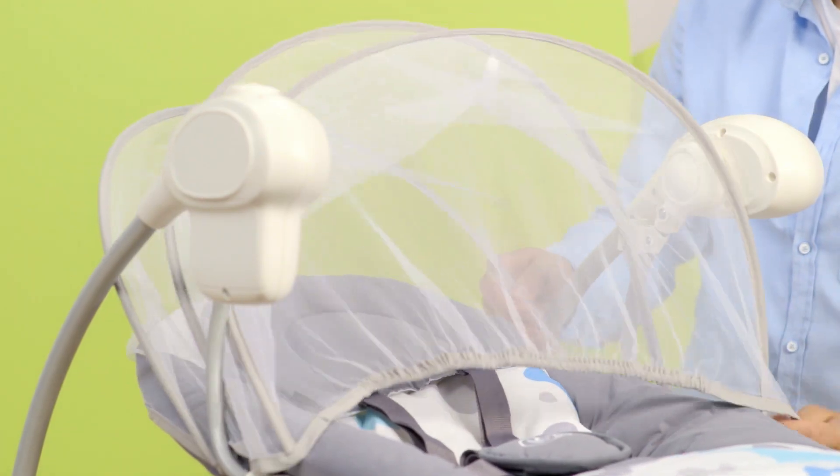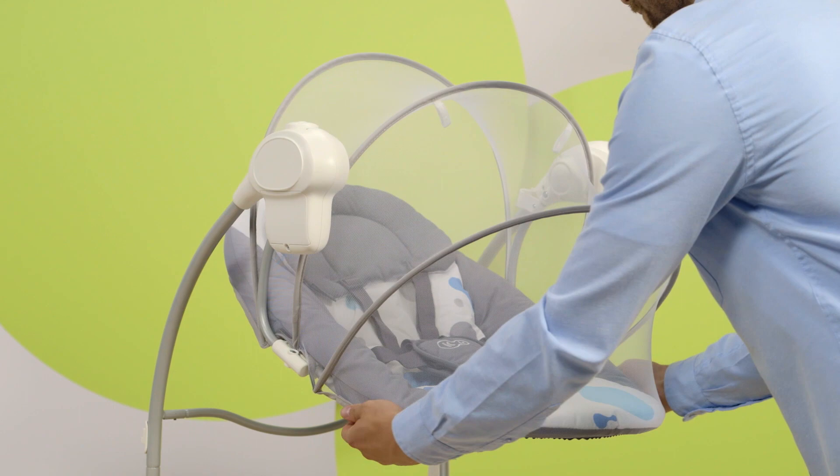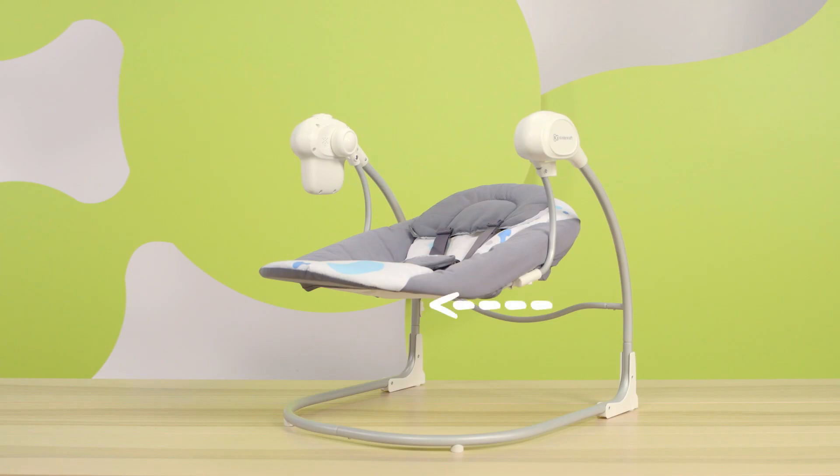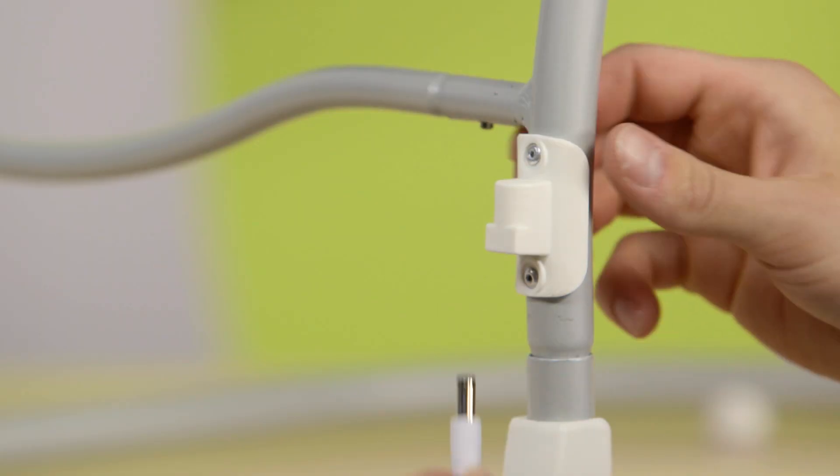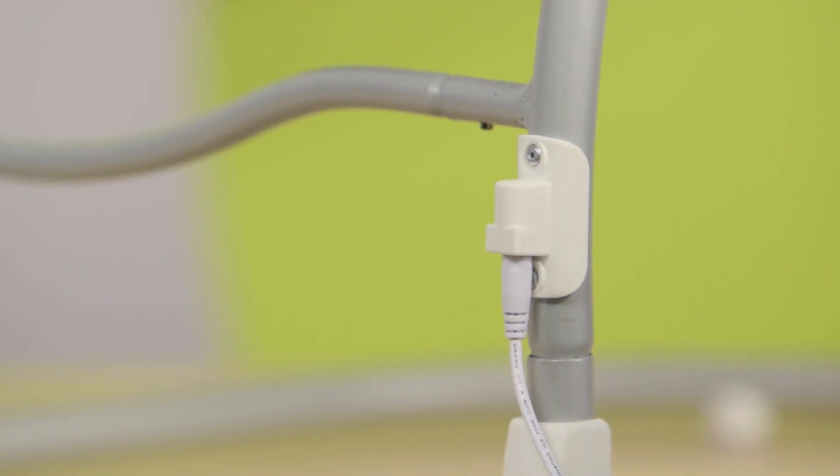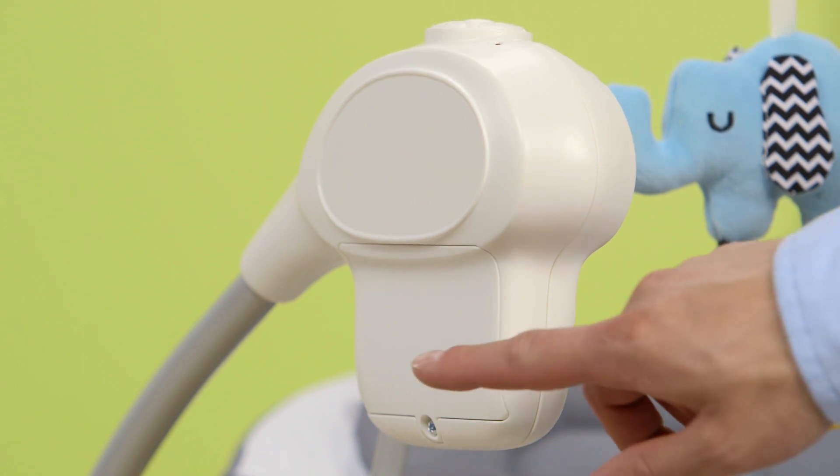To attach the mosquito net, remove the handle with the toy and pull it over the seat. Set the following on the control panel: rocking intensity, rocking time, melodies and volume. Before starting it up, connect the USB cable included. You can also use batteries. Three 1.5V Type-C batteries are installed under the control panel.